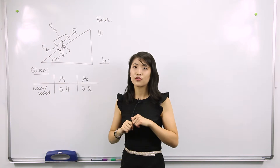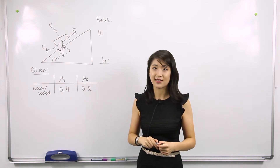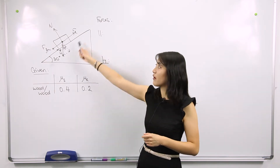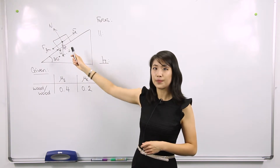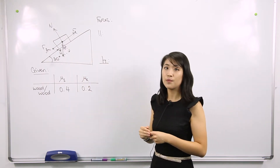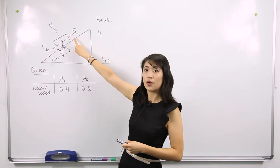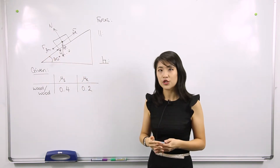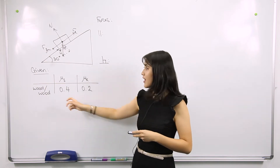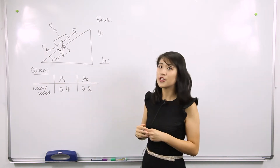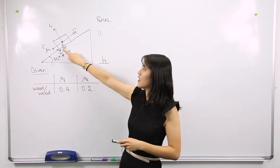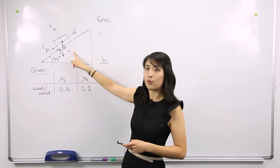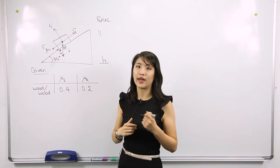The next thing we do is to resolve the forces into two perpendicular axes. In this case, we're going to resolve the forces into components that are parallel to the slope and perpendicular to the slope. Acting parallel to the slope, we have our driving force Fd going up, and opposing that we have a friction force. In the first part of this question, the box is not moving, so static friction is at play. In addition, we have the component of our weight force acting parallel to the slope, which using simple trigonometry is given by mg sin θ.